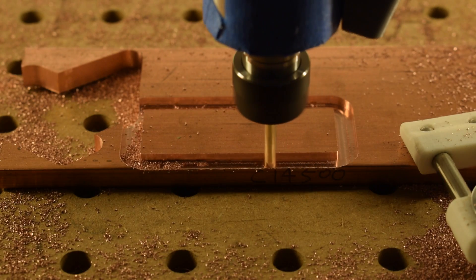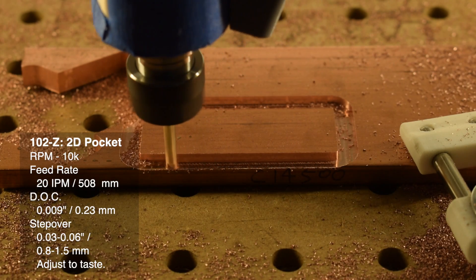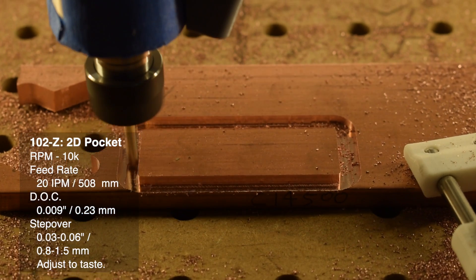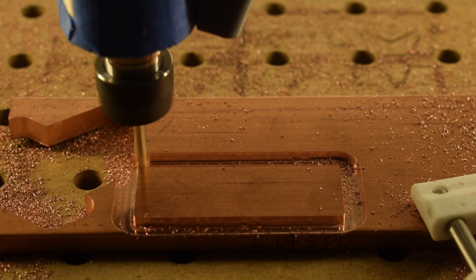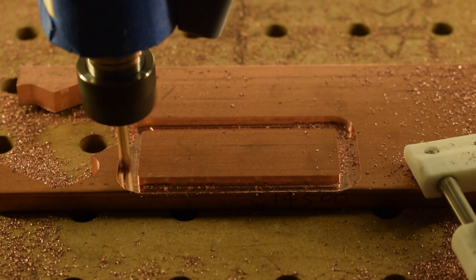Next, let's look at pocketing. 10,000 RPM, 9 thou depth of cut, 20 inch per minute feed rates with a 50% step over. 99% of the time, this toolpath is going to hum along beautifully.